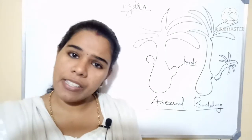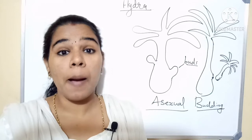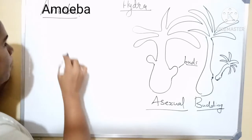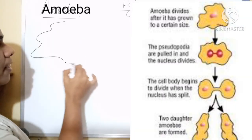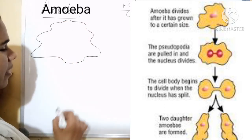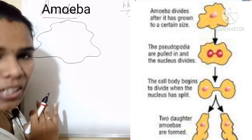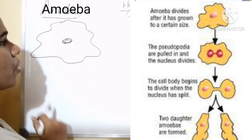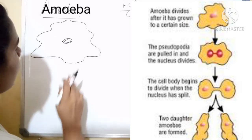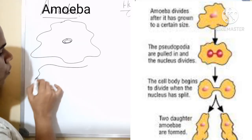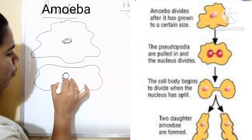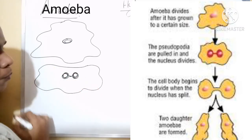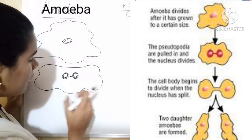Now we move to the next example: Amoeba. Amoeba is irregular in shape — there is no structural variation or defining feature; it is irregular in shape. We know that centrally a nucleus will be present. The first division that occurs inside the amoeba is the nucleus dividing into two.